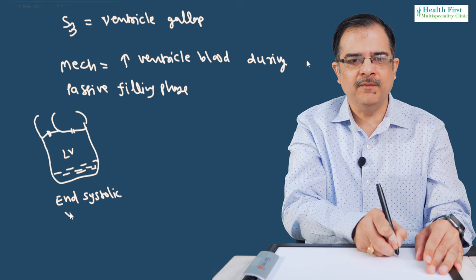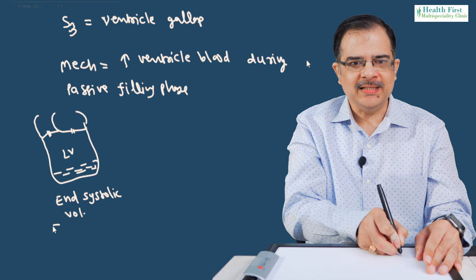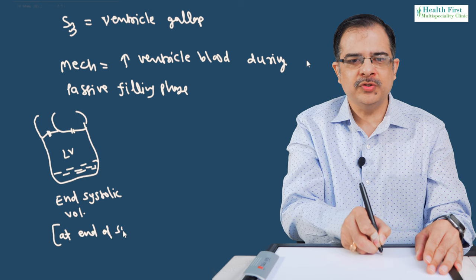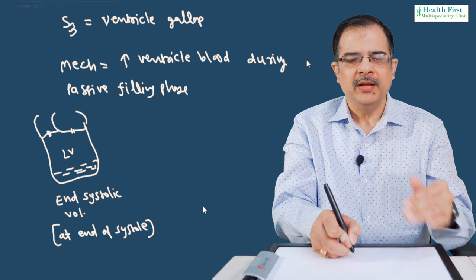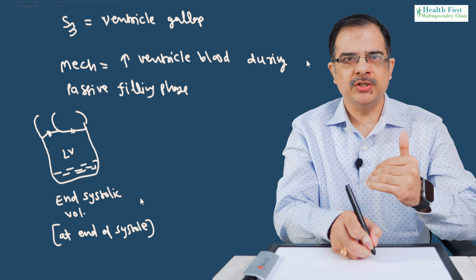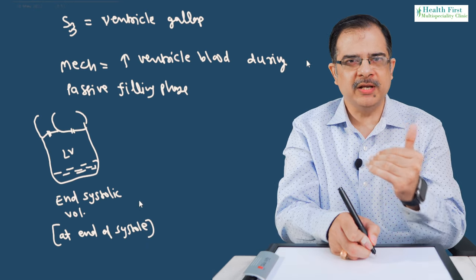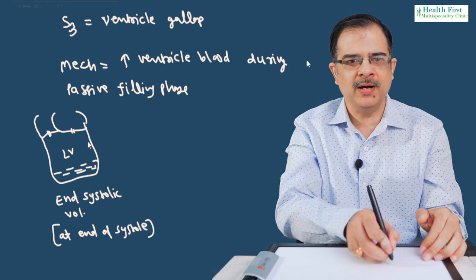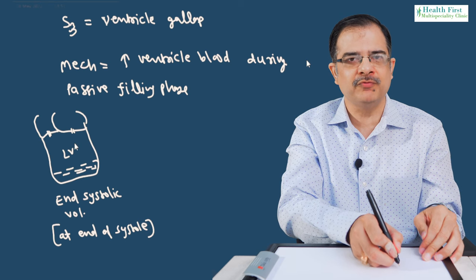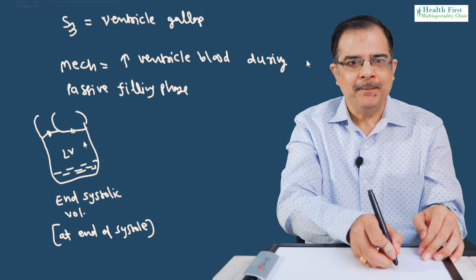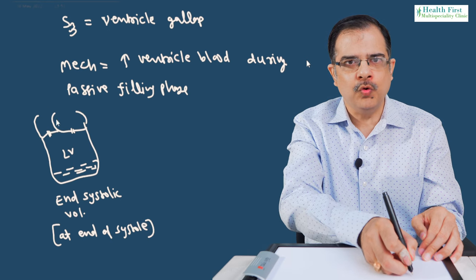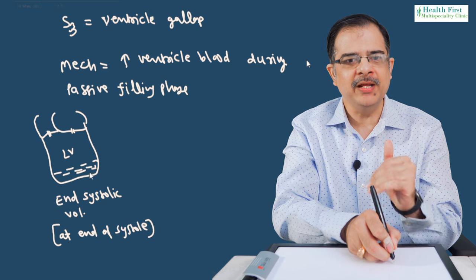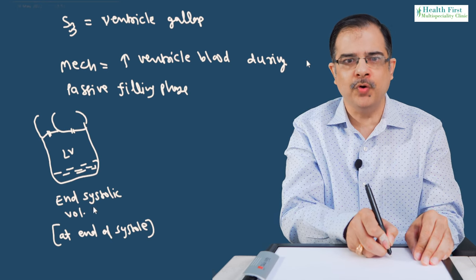This is the end systolic volume — at the end of systole — and it is physiological. Why? Because if the ejection fraction is 70%, and if 100 ml of blood was in the ventricular cavity, 70 ml will be ejected and 30 ml will remain in the ventricular cavity. That 30 ml is known as the end systolic volume.